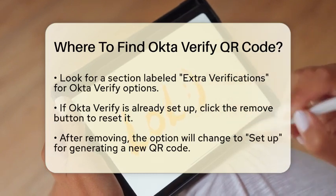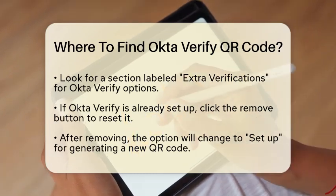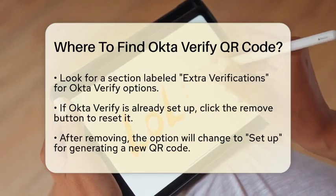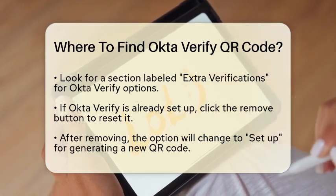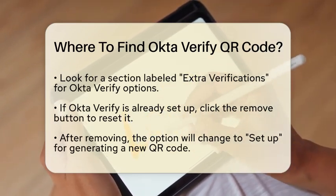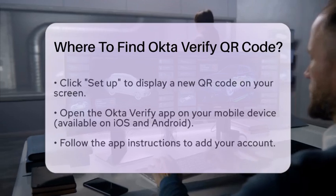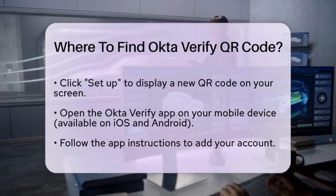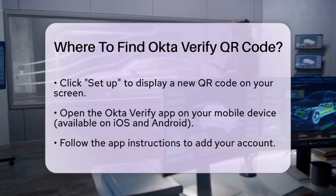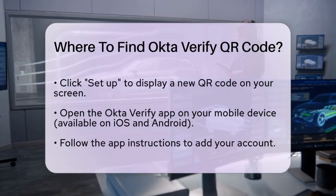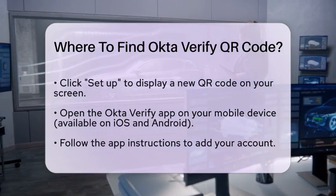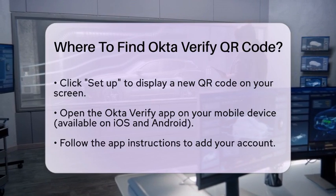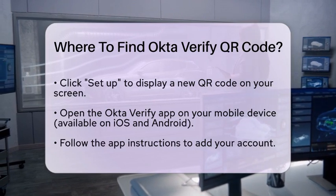If you have previously set up Okta Verify, you will see an option to remove it. Click on the remove button. This action will change the option to 'Set Up', allowing you to generate a new QR code. Once you click 'Set Up', a new QR code will appear on your screen.